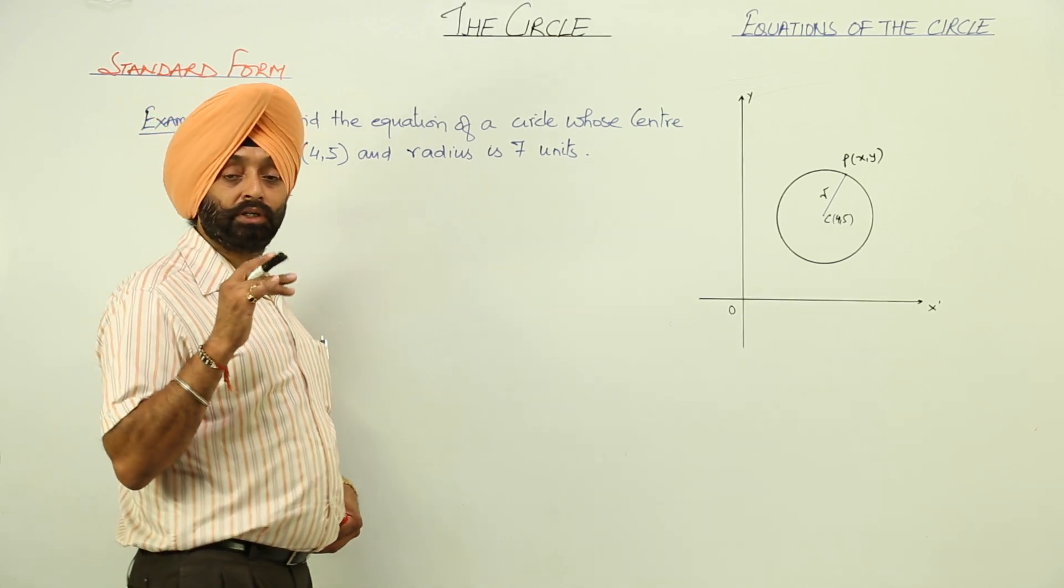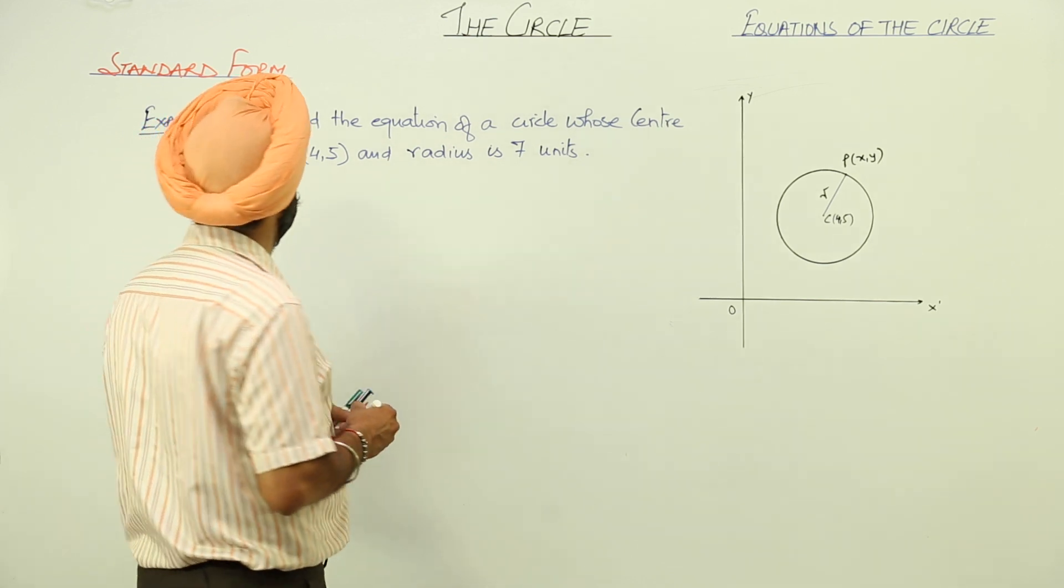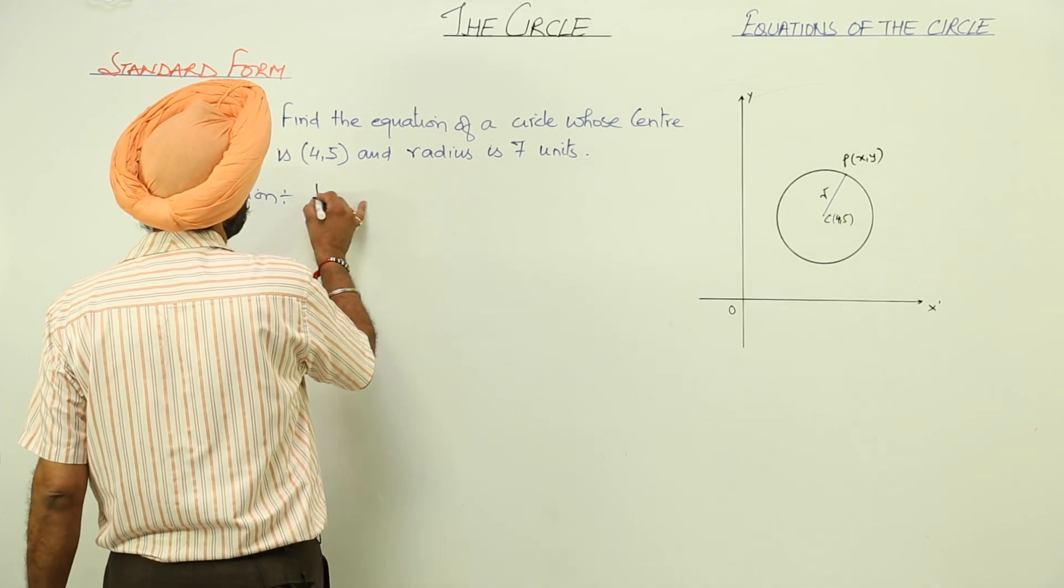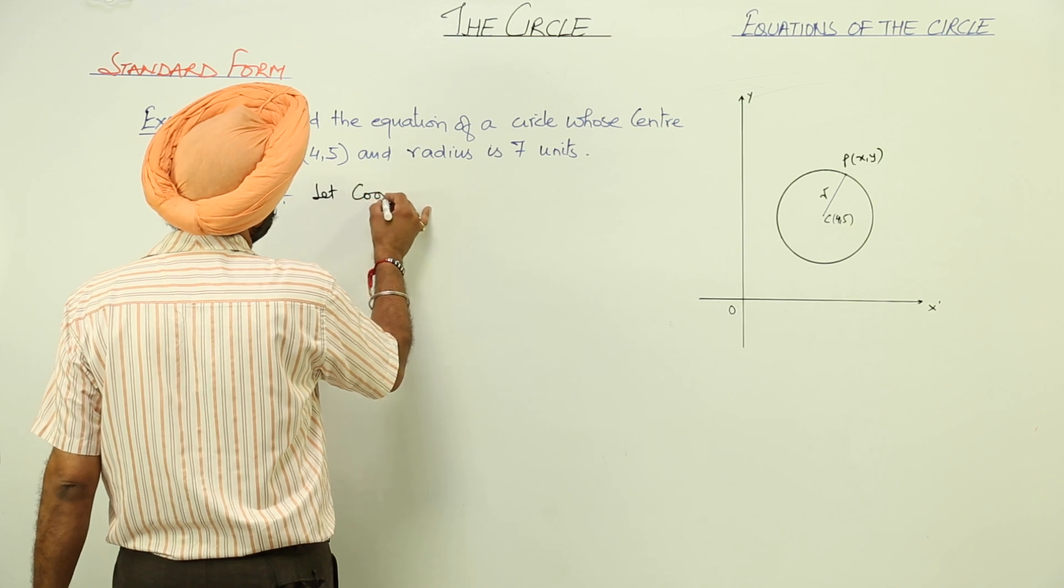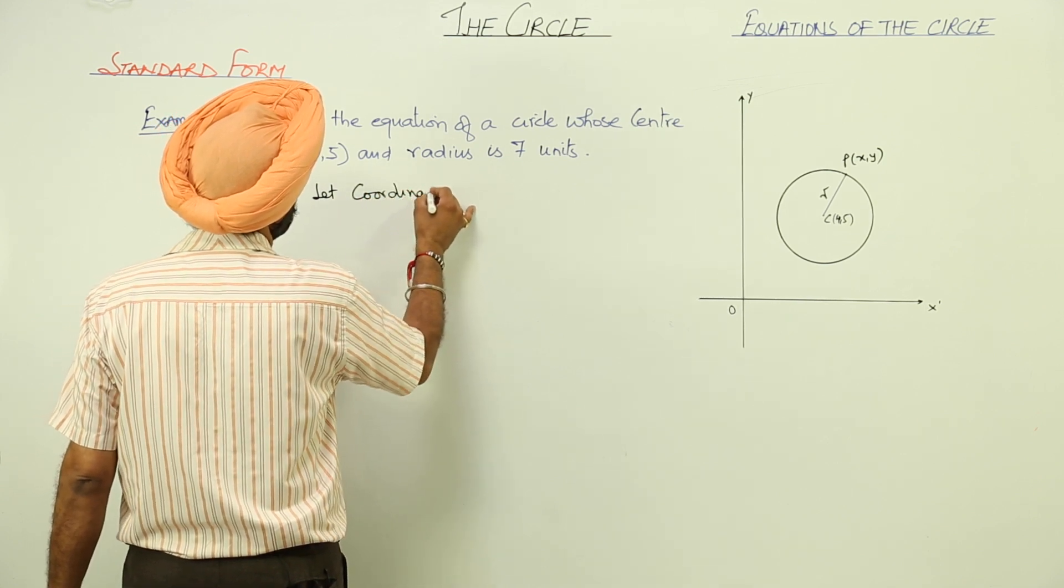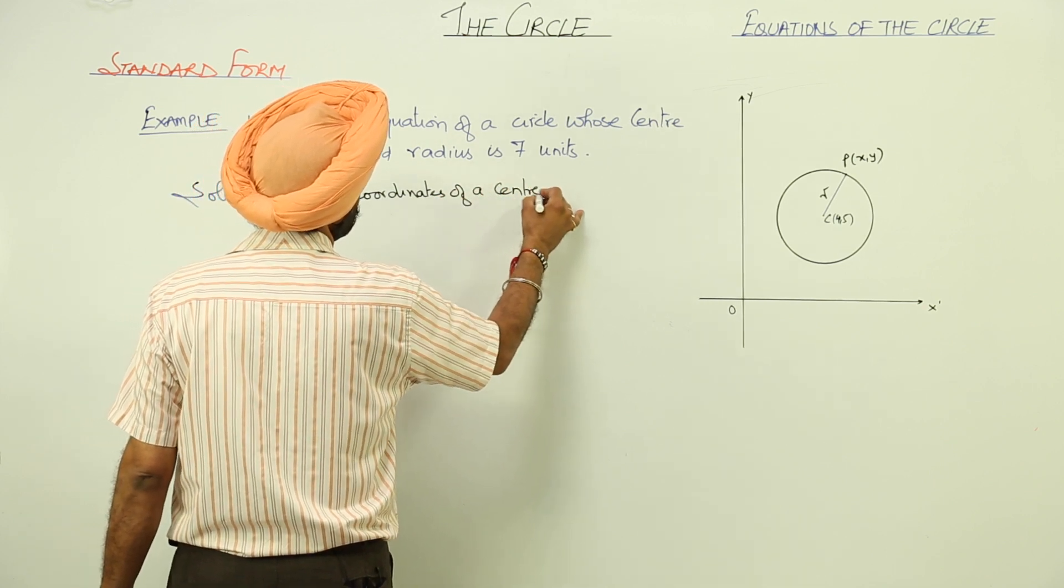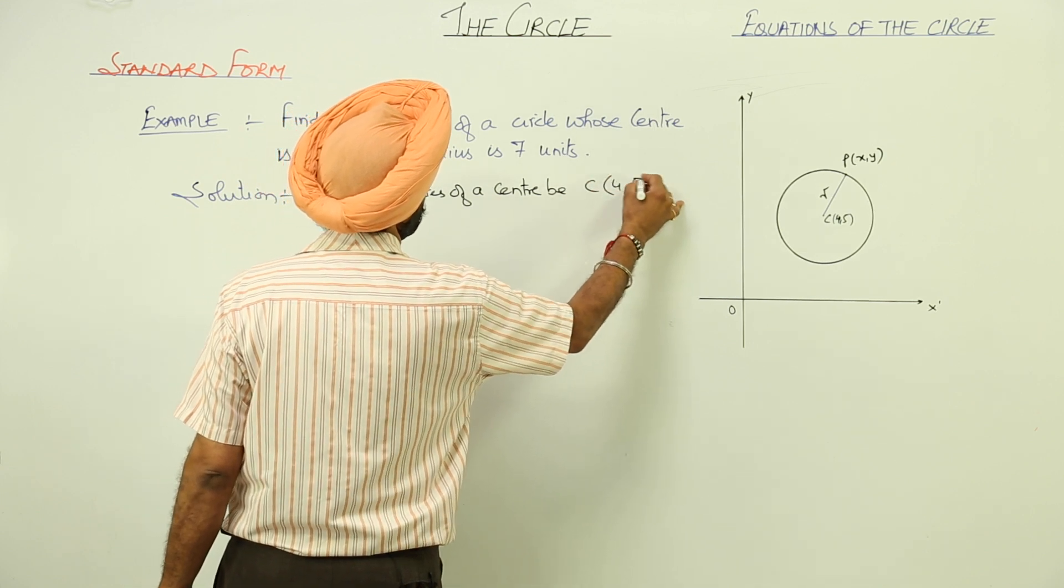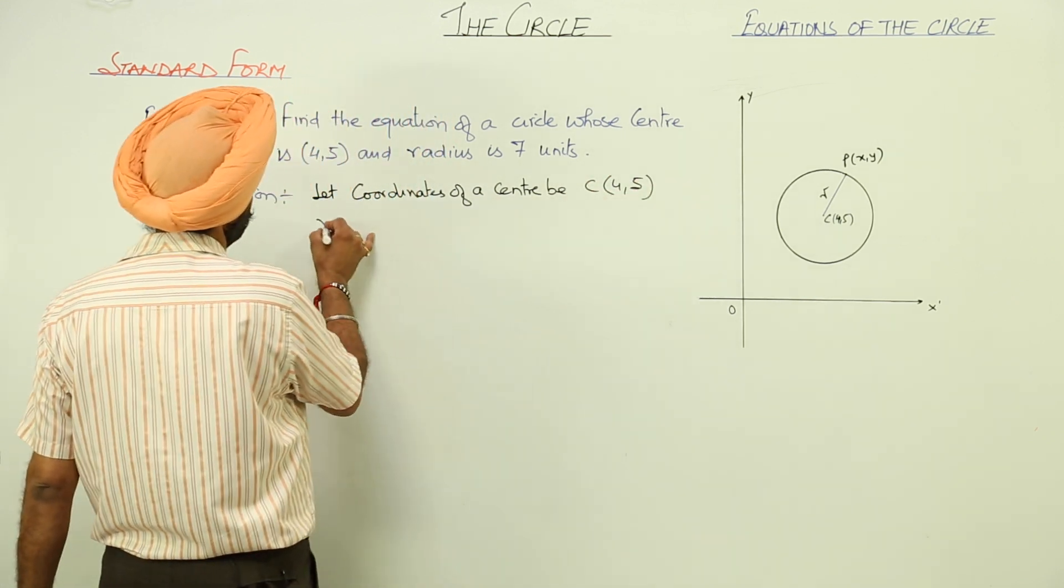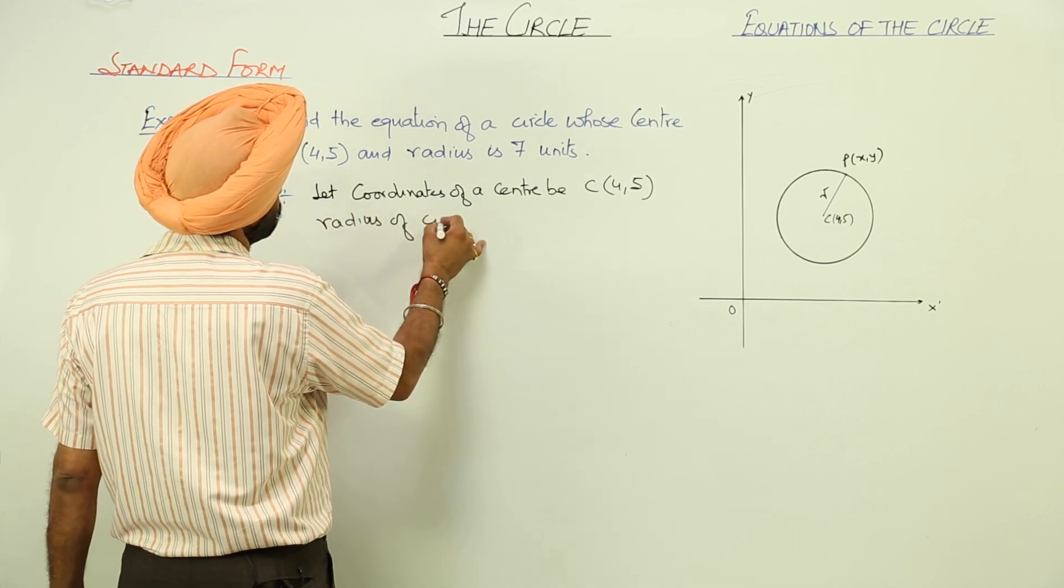This example shows how to express the equation of a circle when the coordinates of the center and radius are given to us. Let the coordinates of center be C(4,5) and the radius of the circle r be equal to 7 units.